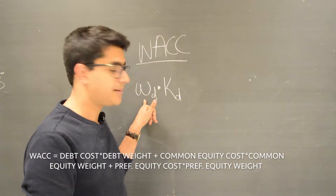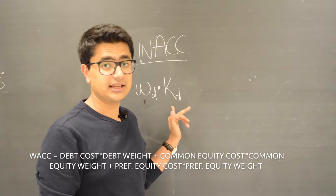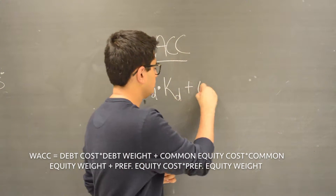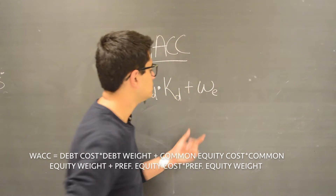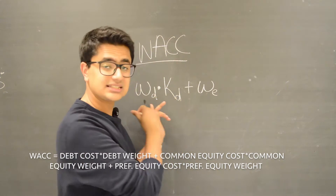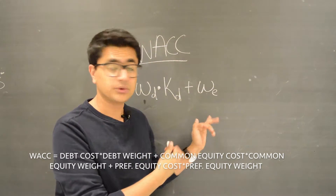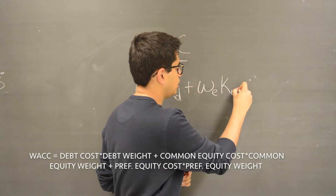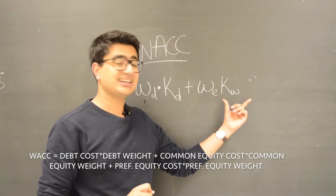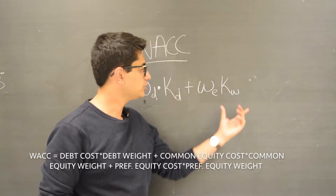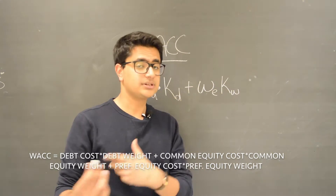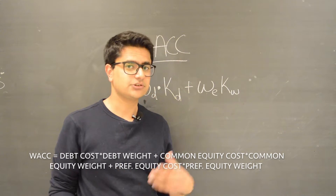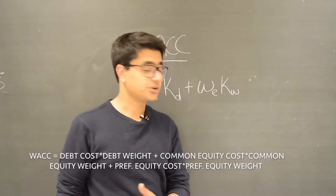That 60% debt portion multiplied by the required rate of return for debt investors gives you one component. You then add the weight of equity — since we have 60% debt, that means 40% comes from equity — multiplied by the cost of equity. The cost of equity is calculated through the CAPM, the capital asset pricing model, which incorporates the company's beta, the risk-free rate, and the market rate. If you haven't checked that video out, be sure to do so.